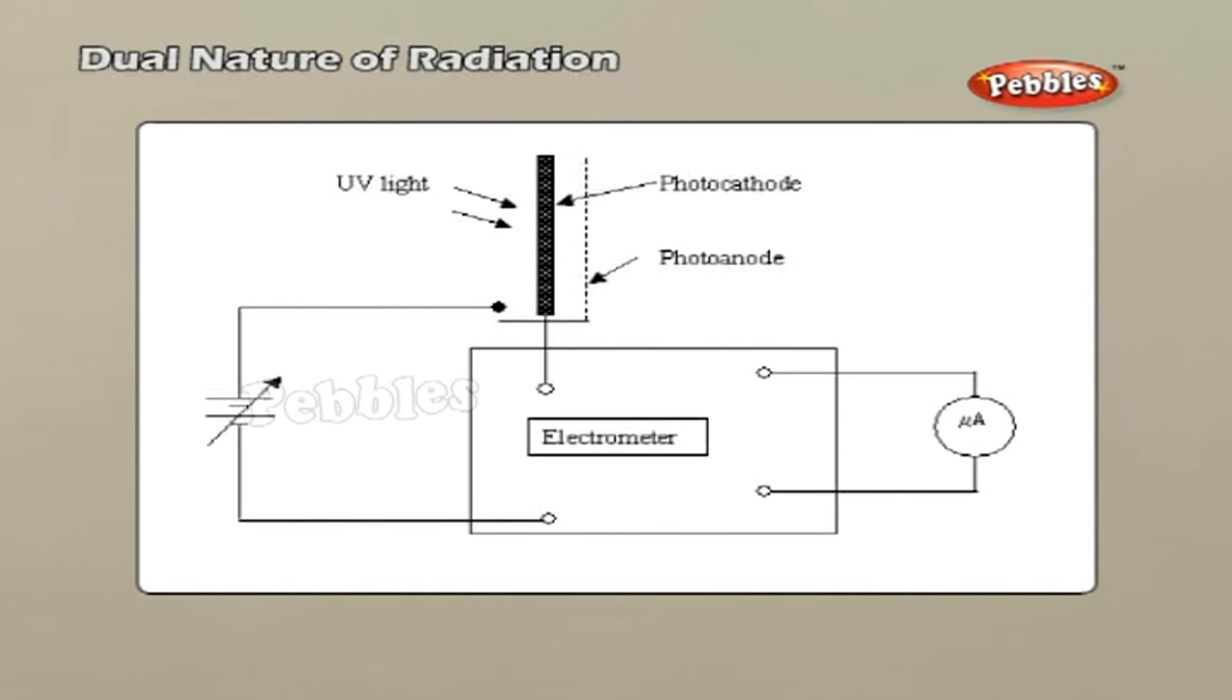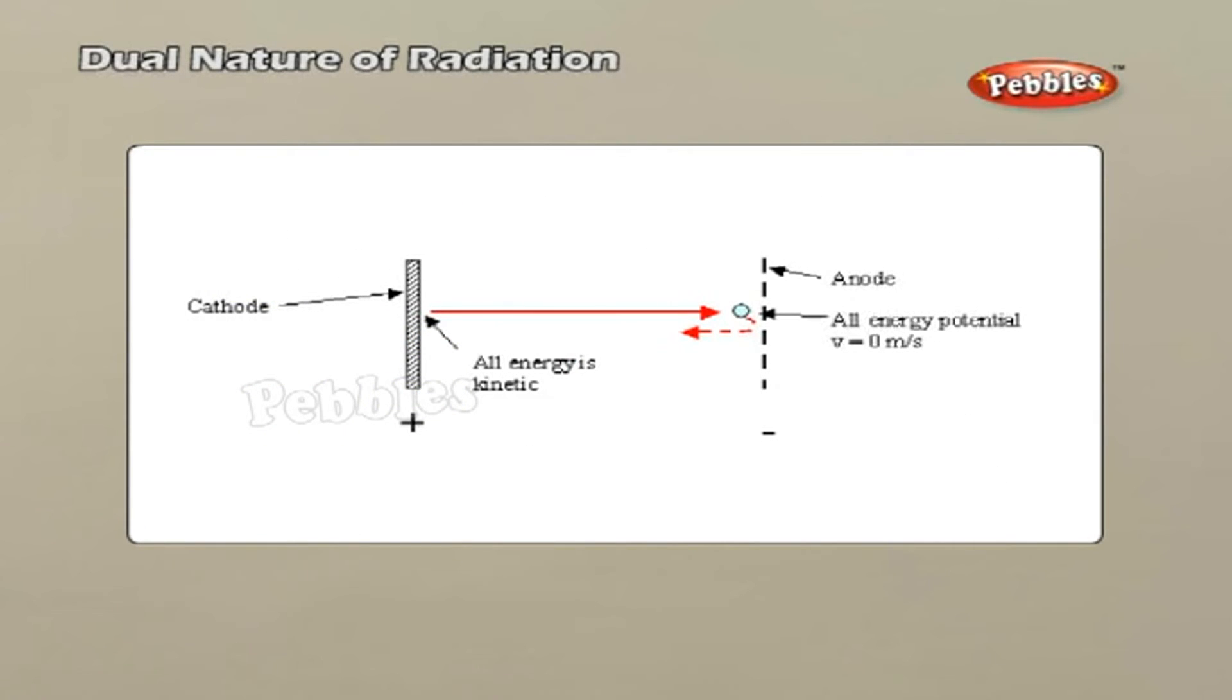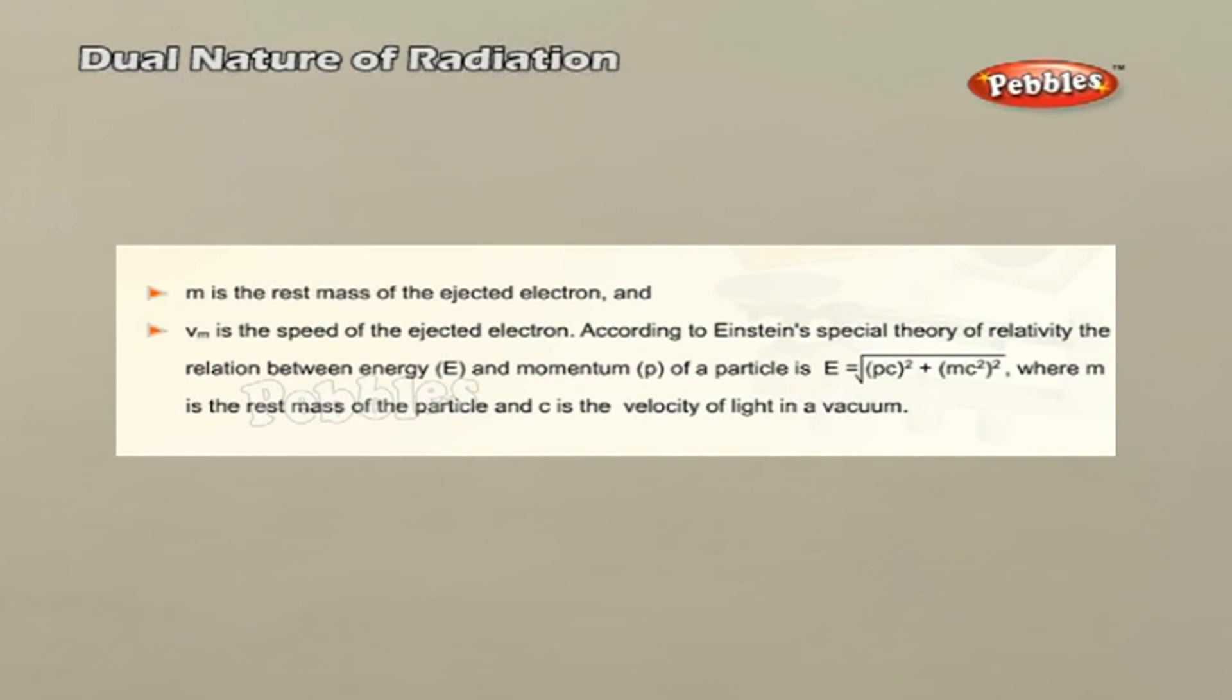The photoelectric effect is a quantum electronic phenomenon in which electrons are emitted from matter after the absorption of energy from electromagnetic radiation such as X-rays or visible light. In 1905, Einstein described light as composed of discrete quanta called photons rather than continuous waves. Based upon Max Planck's theory of black body radiation, Einstein theorized that the energy in each quantum of light was equal to the frequency multiplied by a constant, later called Planck's constant.